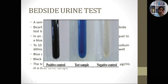So we add 2 grams of sodium bicarbonate into 10 ml of urine first. Once the salt is dissolved and the urine becomes alkaline, we then add 1 gram of sodium dithionate.